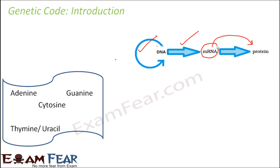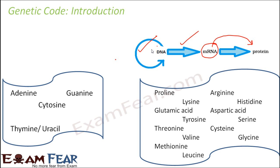When we talk about mRNA, what is there in mRNA? mRNA is made up of just four nitrogenous bases: adenine, guanine, cytosine, and uracil — or if it is DNA, then thymine. So nucleic acids, both DNA and RNA, are made up of any of these four bases: AGTC or AGCU. But proteins are made up of amino acids like proline, arginine, lysine, histidine — a total of 20 amino acids form the varieties of proteins we see.